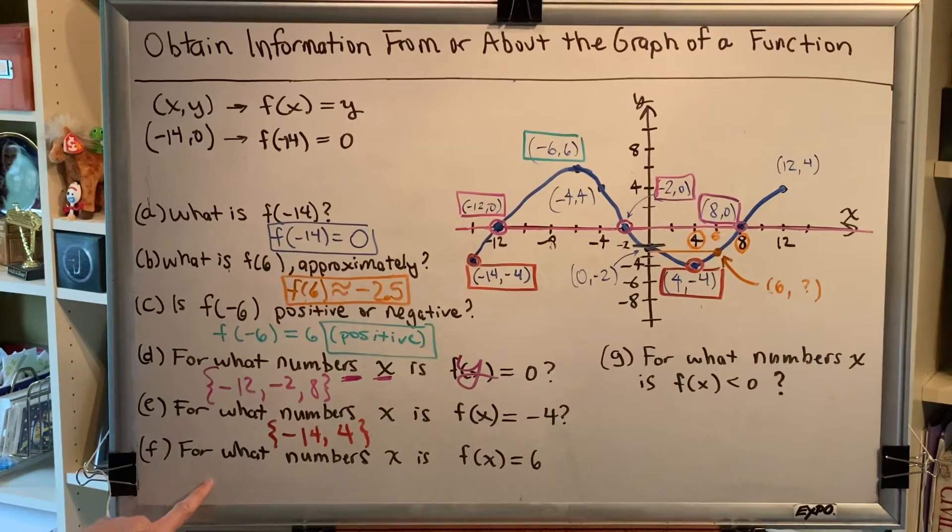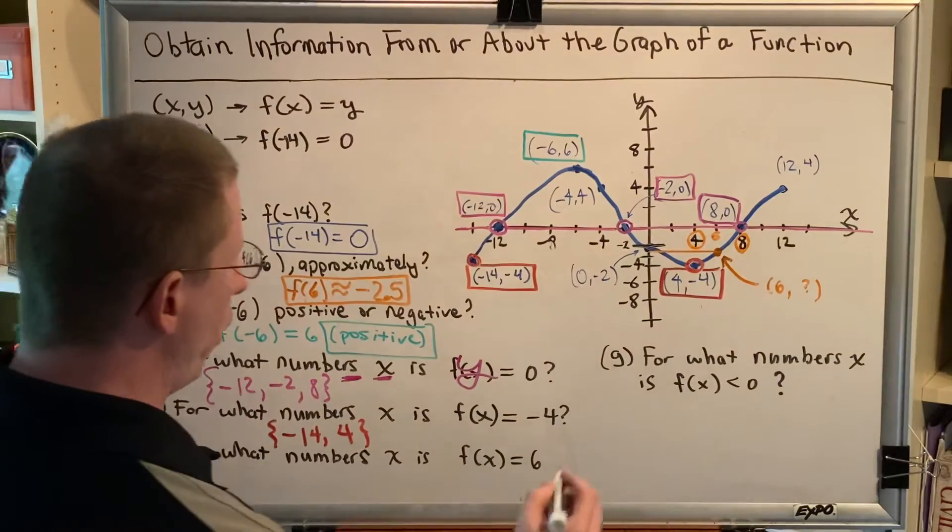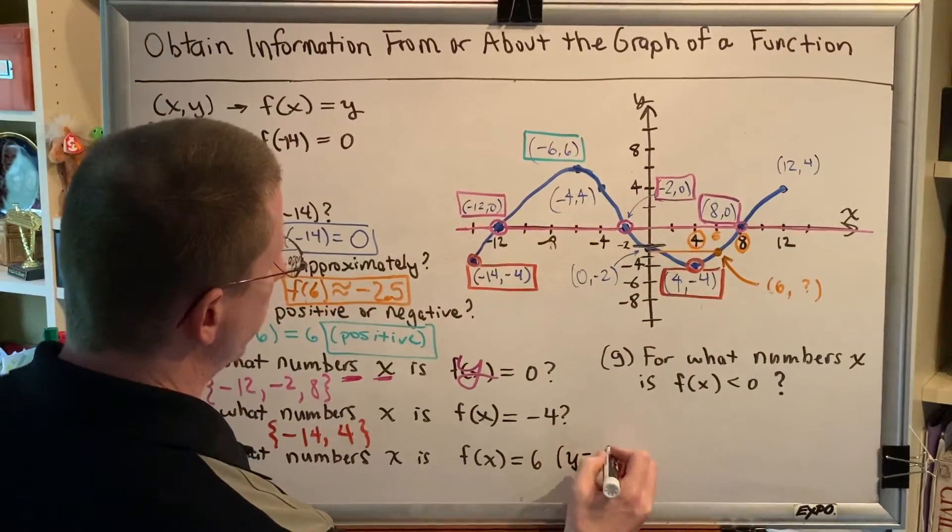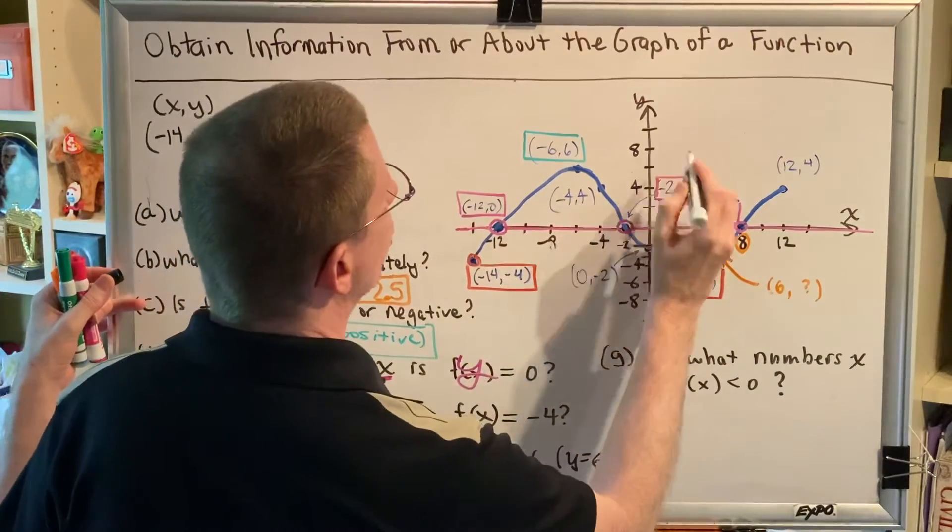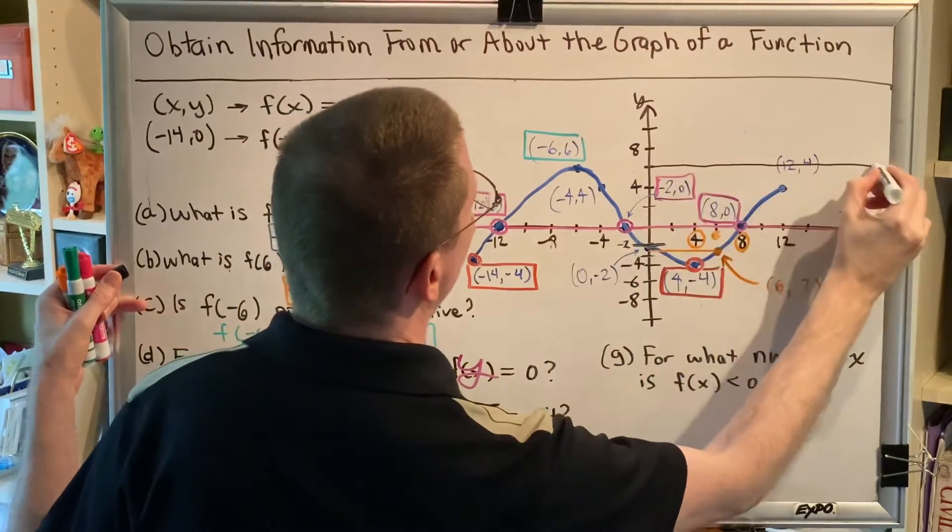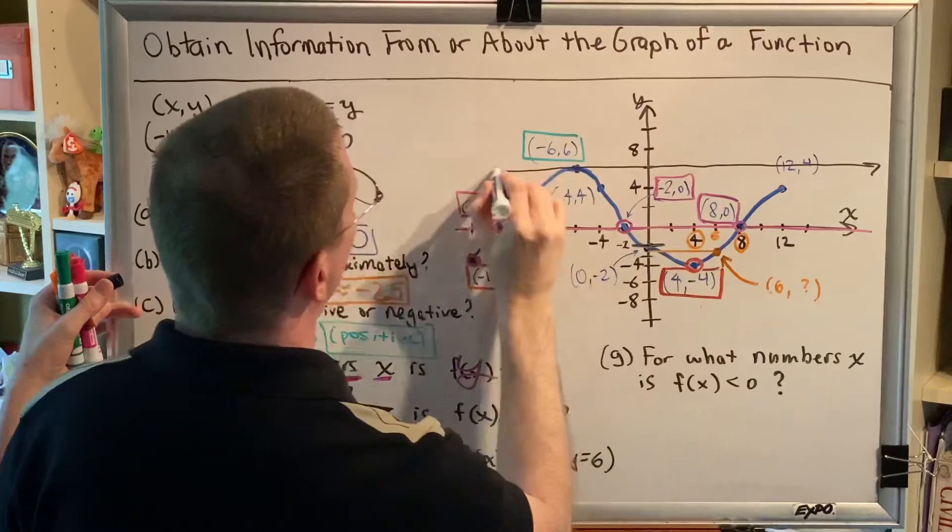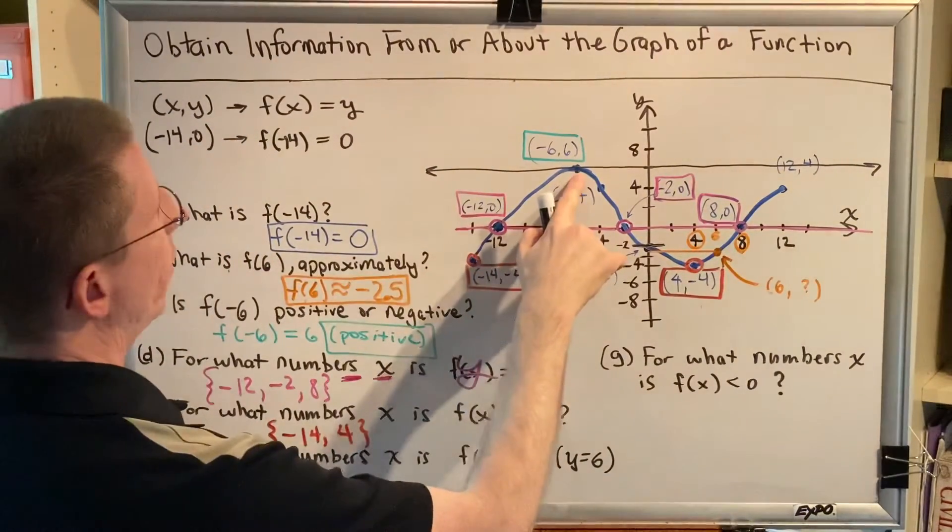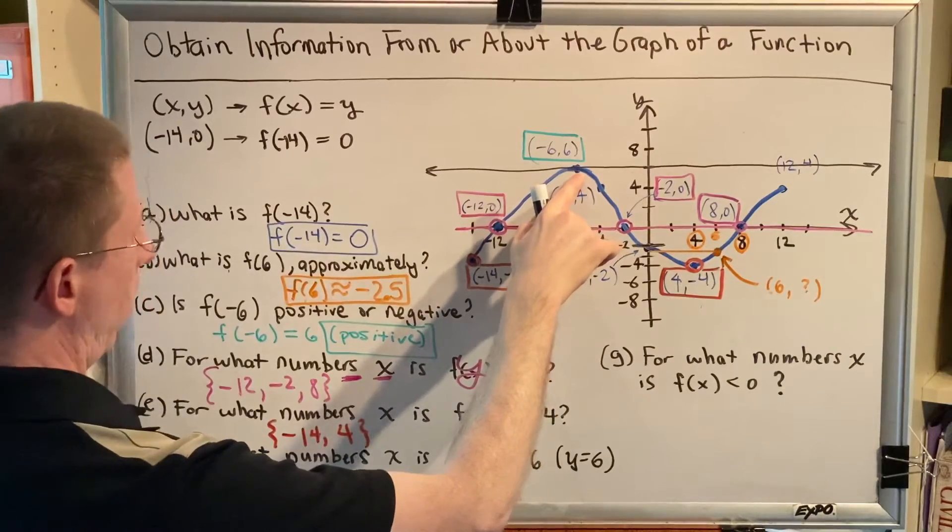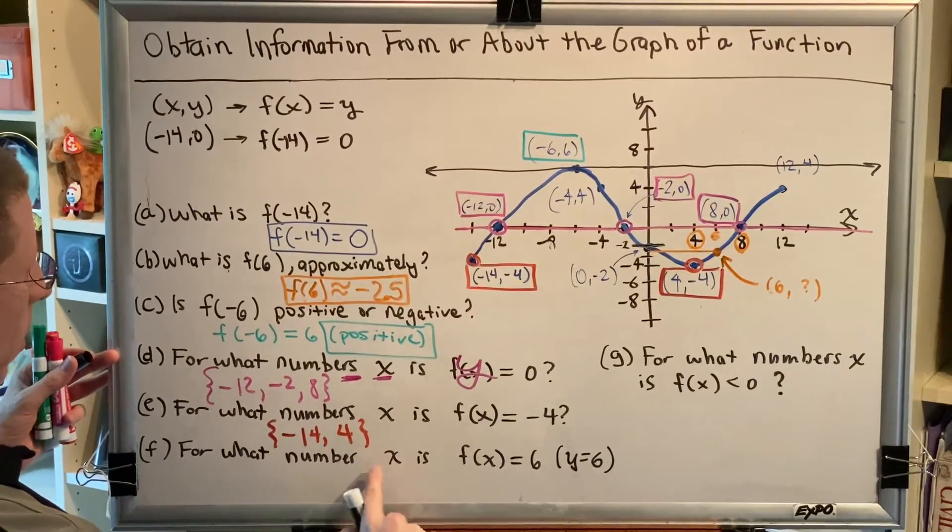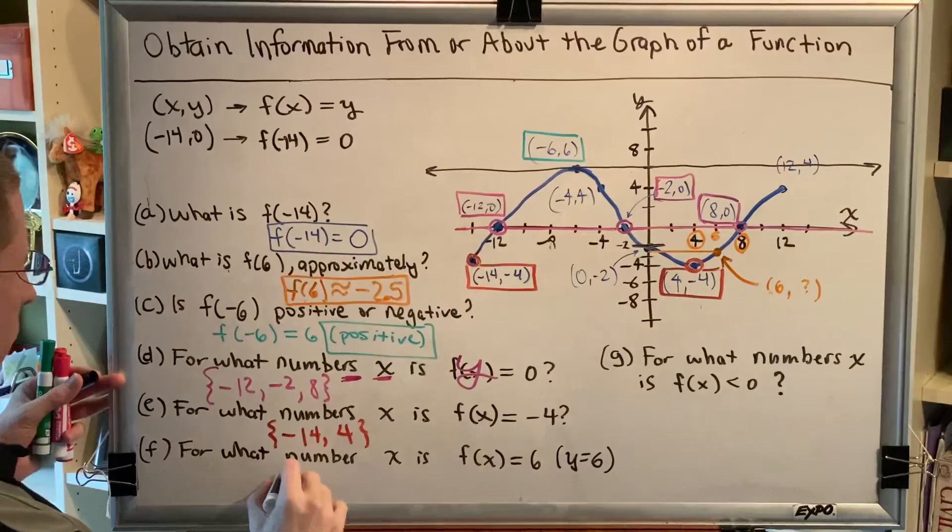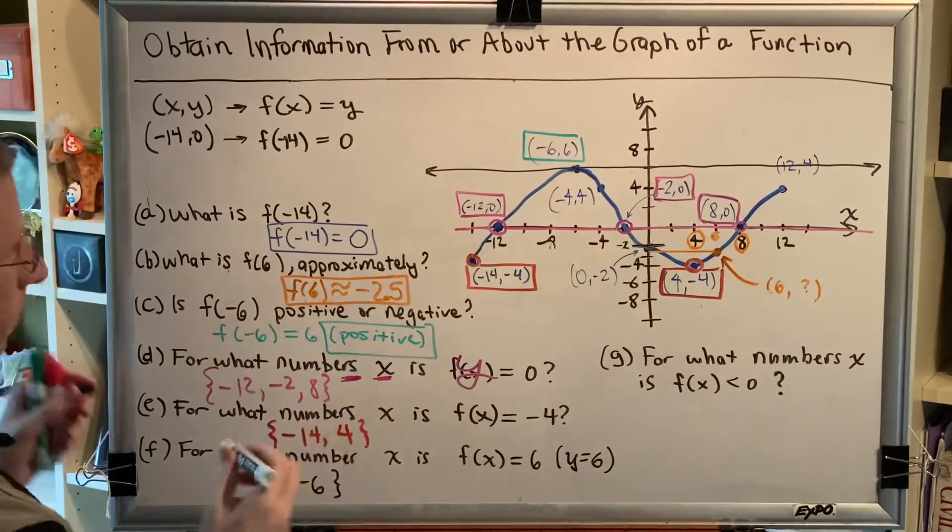Let's use that method on this problem. For what numbers x is f(x) equal to 6? Well, let's draw a horizontal line, excuse me, a horizontal line y equals 6, and that will help us to answer this question. So y equals 6 is the horizontal line at a height of 6. And we look for where that horizontal line intersects the blue curve, and we find that it intersects it at just one location, right here. And since we're looking for x, in this case it's just one number, then we report our answer as negative 6.